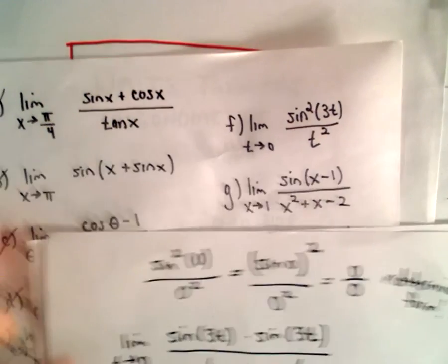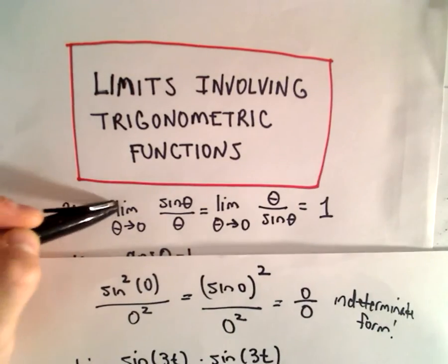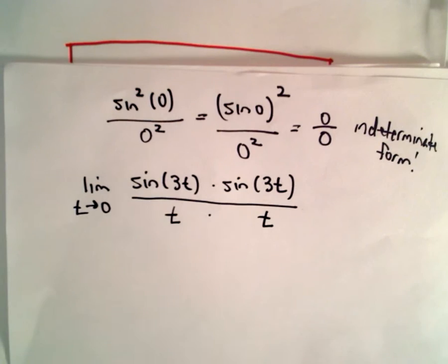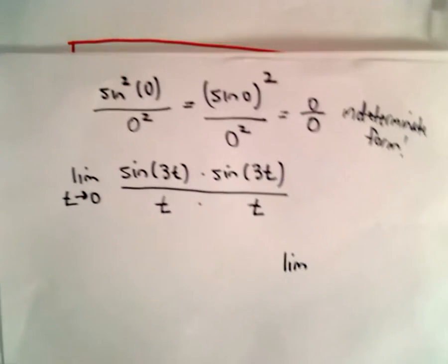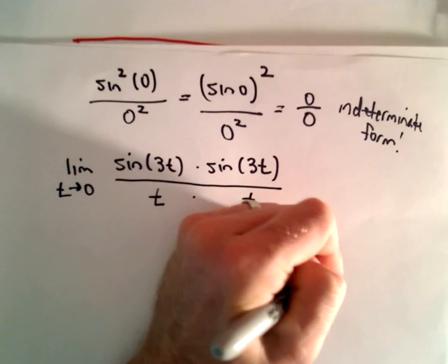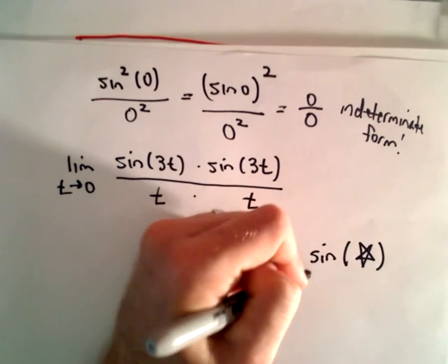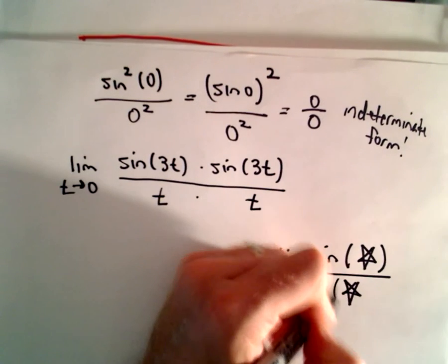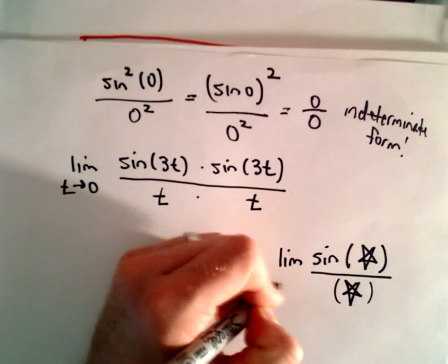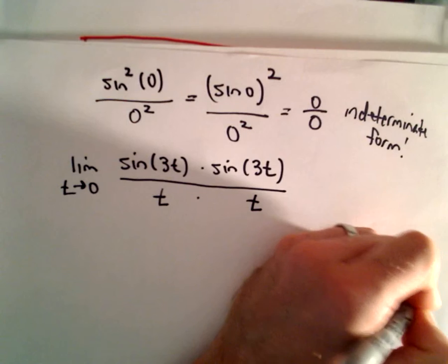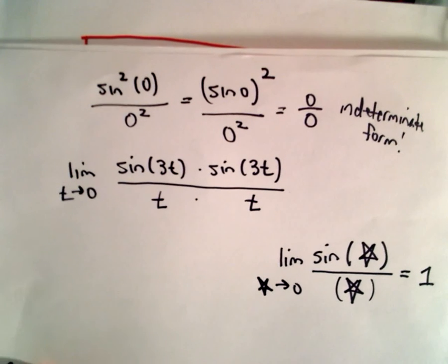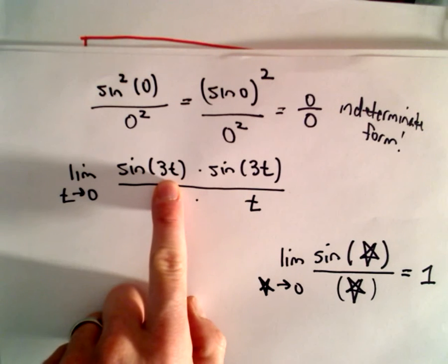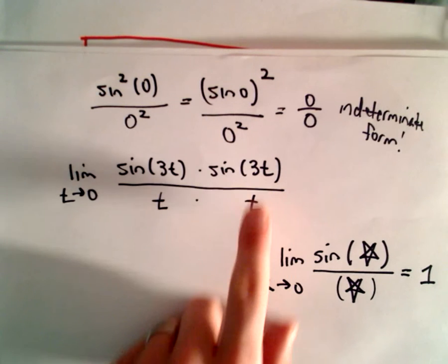The way that we had our limit written, we've got the limit as theta approaches 0 of sine theta over theta — that equals 1. So, if we have sine of some stuff and we have that exact same stuff in the denominator, as long as that stuff is approaching 0, that limit is going to equal 1. What I'm trying to get across is we've got a 3t, but we only have a t — same thing here, we've got a 3t and only a t.